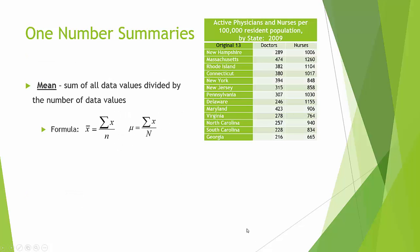Let's take a look at an example. I used census data from 2009, and found the active physicians and active nurses per 100,000 residents of population. This chart has data for the states that were the original 13 colonies of the United States. Let's look specifically at the nurses. I'd like to know what is the mean — on average, how many nurses are there per 100,000 residents for each state. I want to add up all of the data values and divide by how many there are.